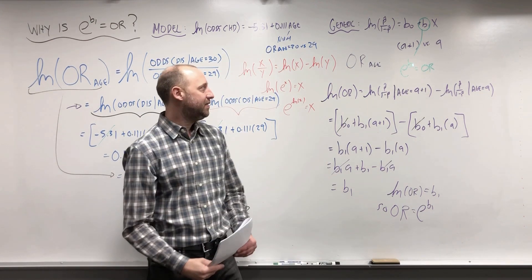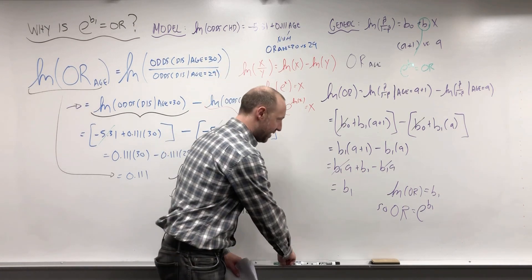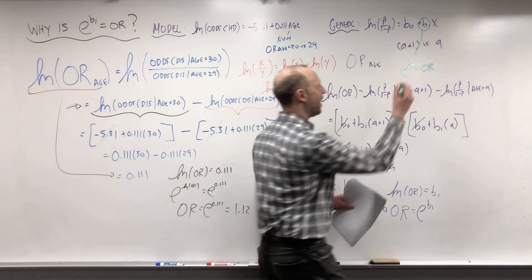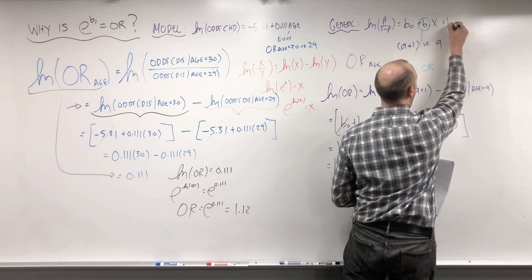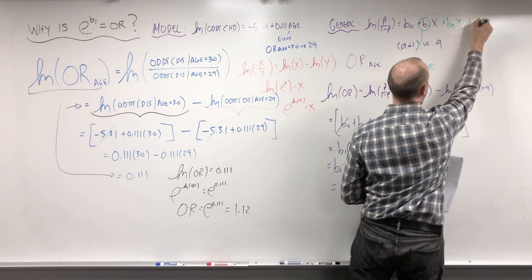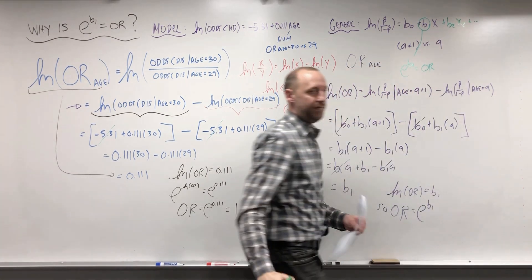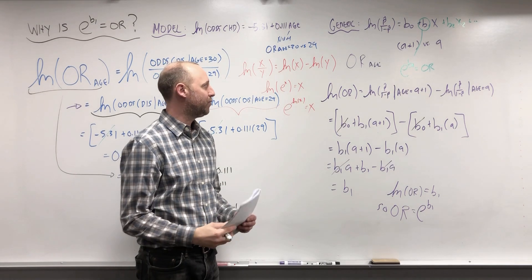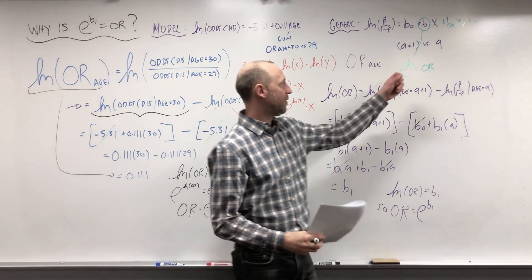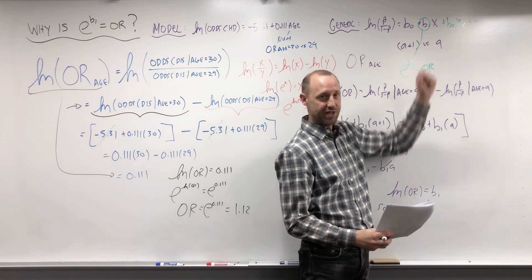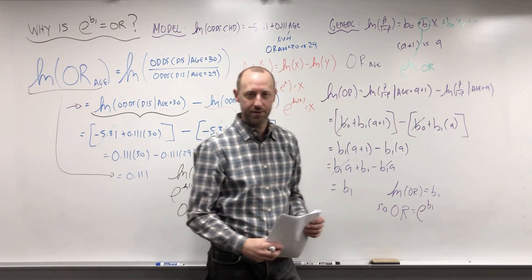What we're going to start to do, like we did with linear regression, is look at how we can estimate odds ratios adjusted for other variables. As we start to include multiple variables and look at multiple logistic regressions, we can estimate odds ratios adjusted for other variables.